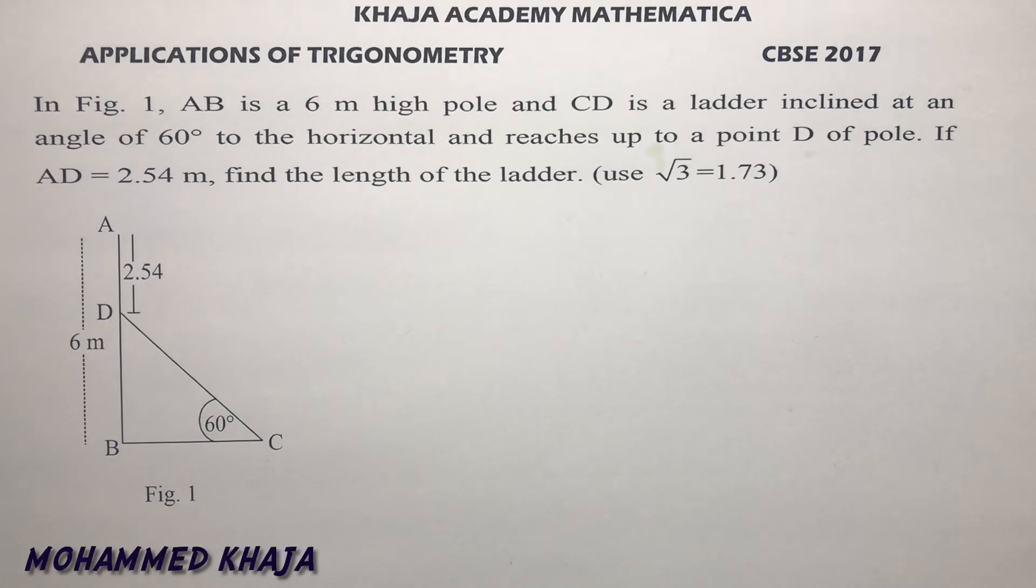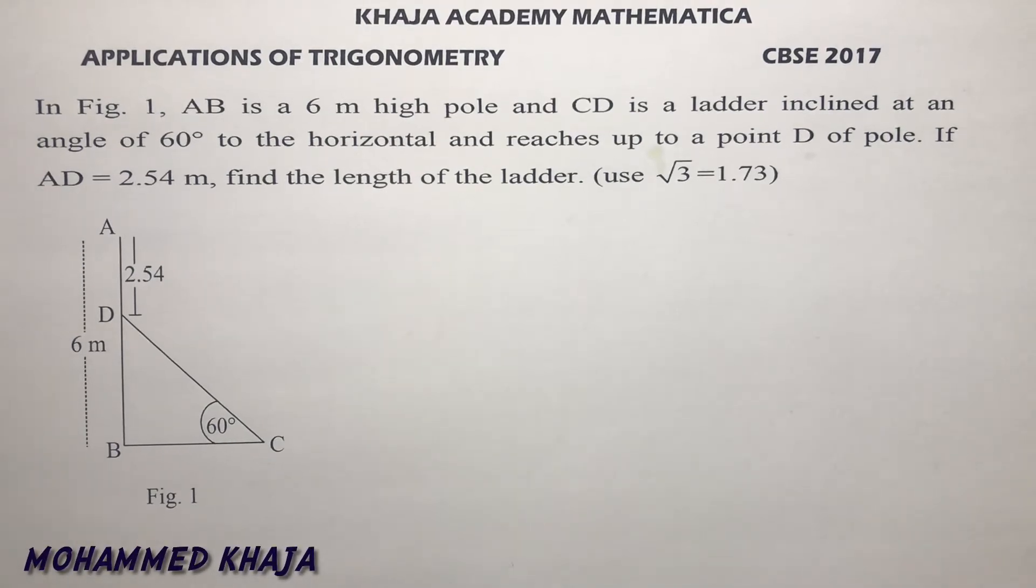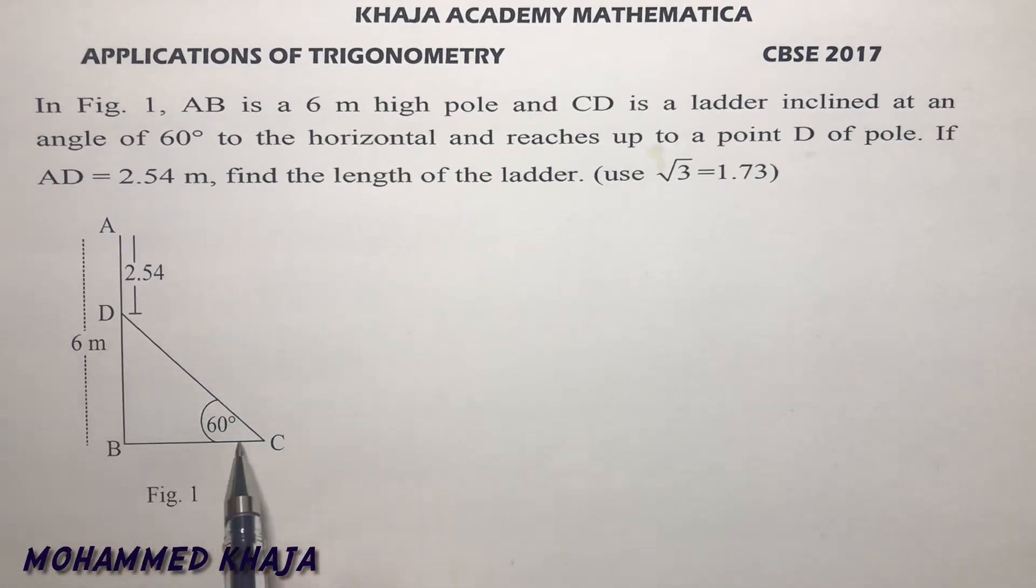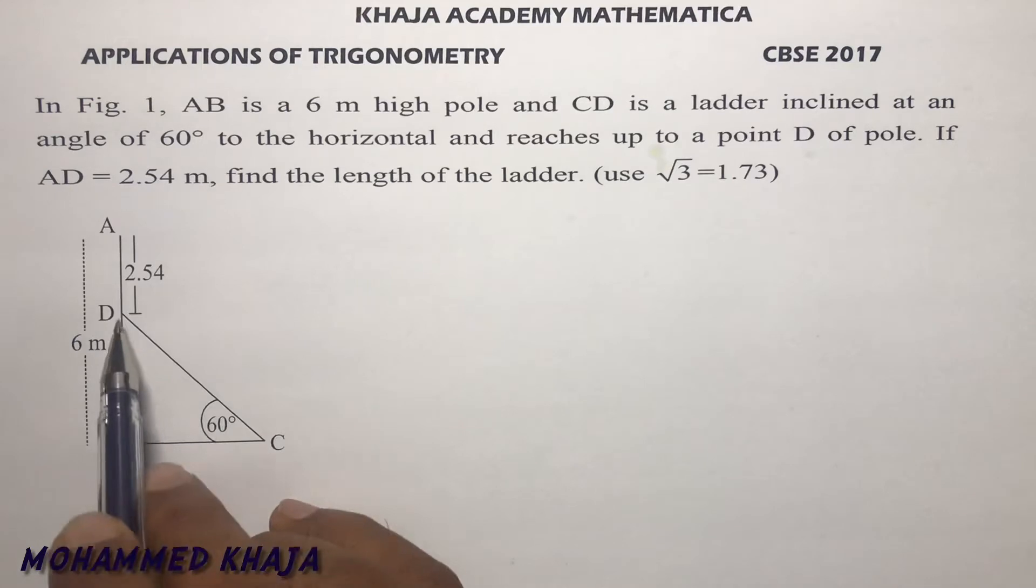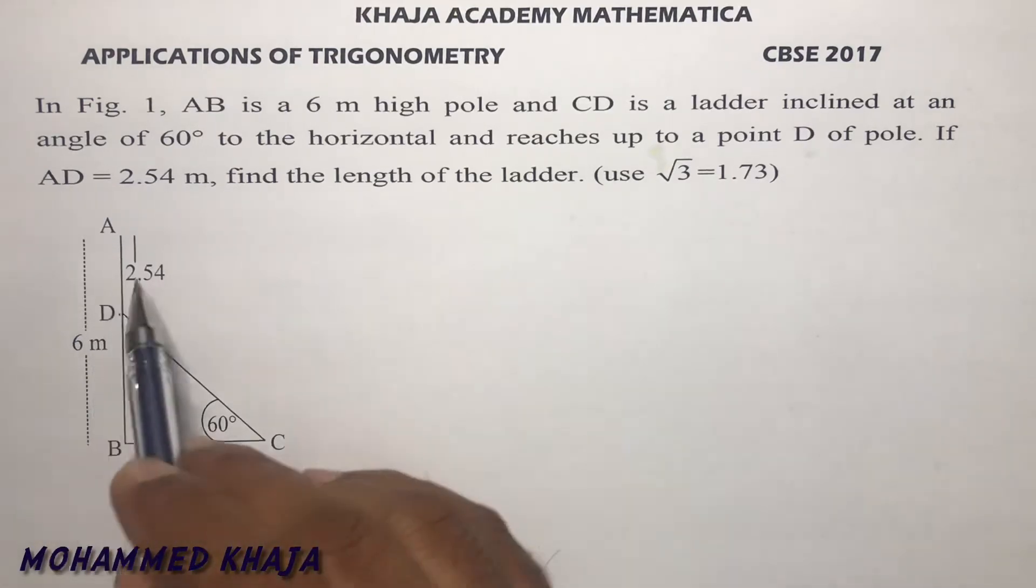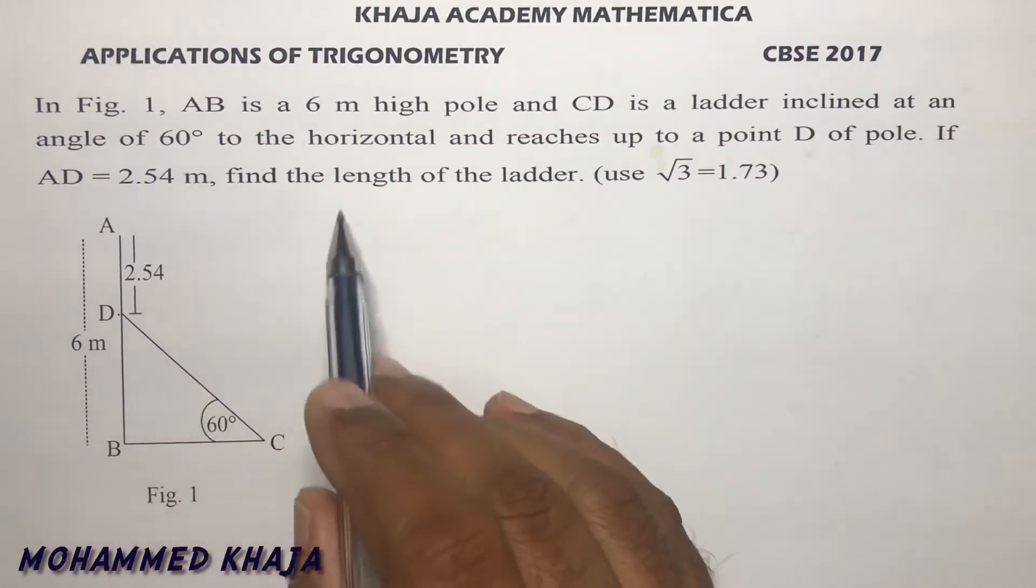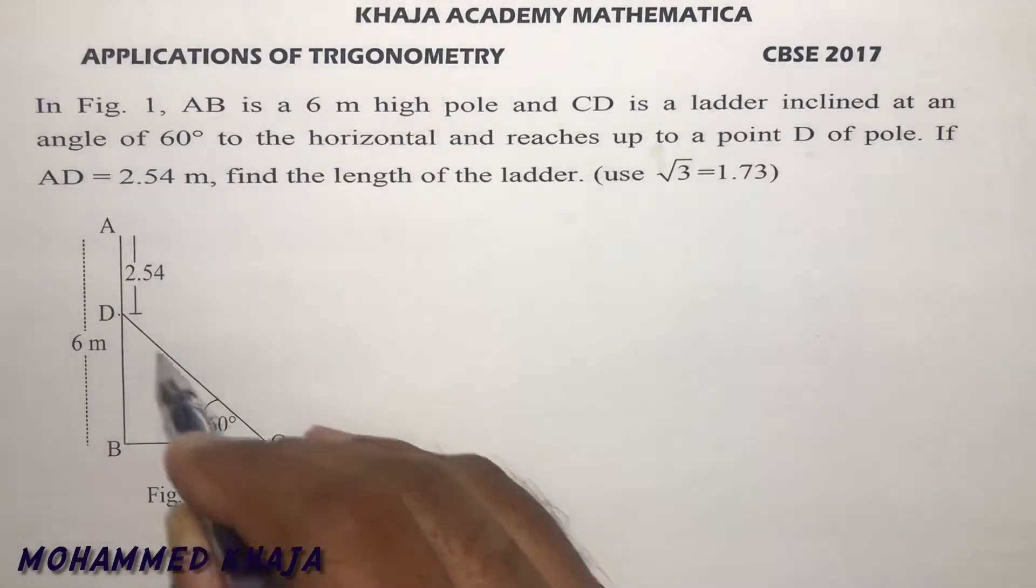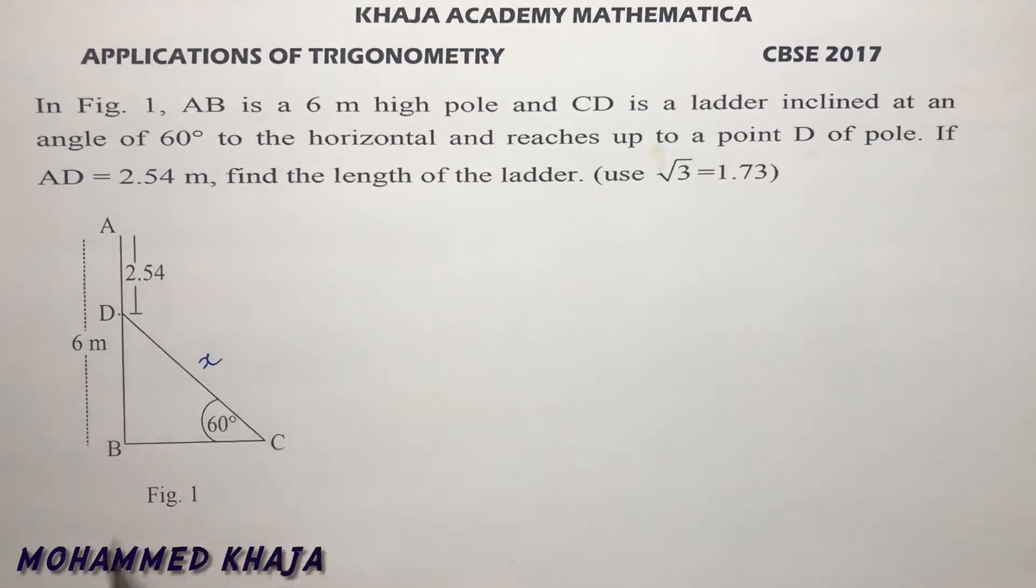In figure, AB is a 6 meter high pole and CD is a ladder inclined at an angle of 60 degrees to the horizontal and reaches up to a point D. If AD is 2.54 meters, find the length of the ladder. So I need to find CD which is X.